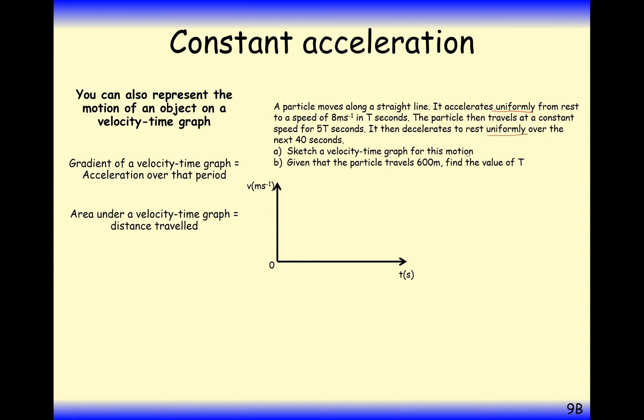Part A, draw a velocity time graph for this motion. The second sentence here says it travels up to a velocity of 8 meters per second in t seconds uniformly. So that means this line here is a straight line up to speed of 8 after t seconds.